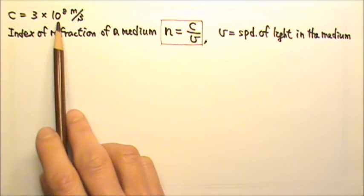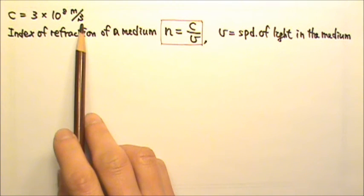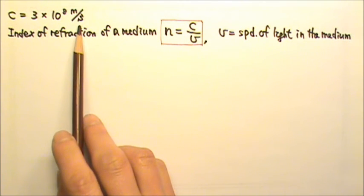Light travels at the speed of 3 times 10 to the 8 meters per second in vacuum. Its speed is slower in any other medium.